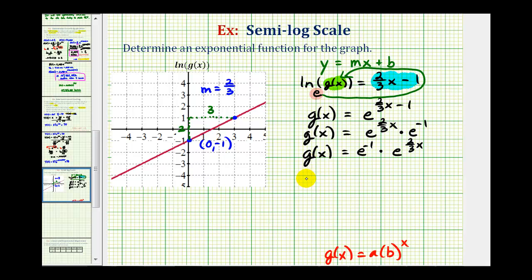Now let's rewrite this as g(x) where e^(-1) equals the reciprocal of e, or 1/e. Then we can write e^((2/3)x) as (e^(2/3))^x. So now this is in the form g(x) = a · b^x.